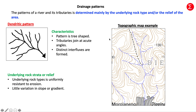Let's firstly take a look at the dendritic pattern. Some characteristics associated with the dendritic pattern are that the pattern is tree-shaped, tributaries join at acute angles, and distinct interfluves are formed. Interfluves are the area between your tributaries. We can see a topographic map example here which is a clear depiction of a dendritic pattern.